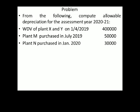Plant X and Y — their combined written down value is 4 lakh rupees. Plant M was purchased in the month of July 2019. Since it was purchased in July 2019, it is obviously with us for more than 180 days.